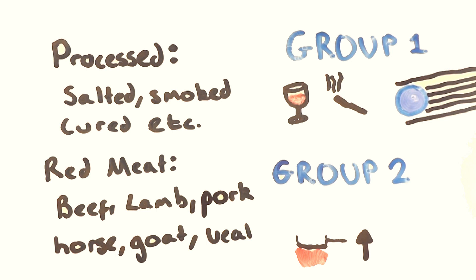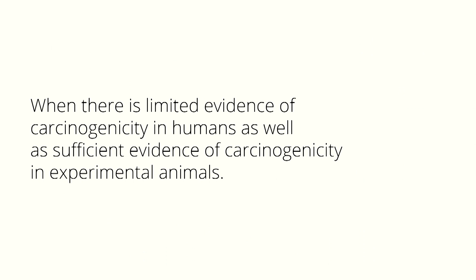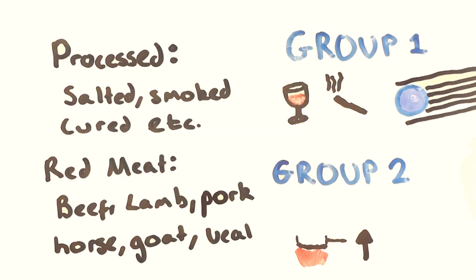Red meat has been placed into group 2a, which means there's limited evidence of carcinogenicity in humans, but there is sufficient evidence in experimental animals. These groups only actually show how confident we are in certain things causing cancer, not how much they actually cause cancer.